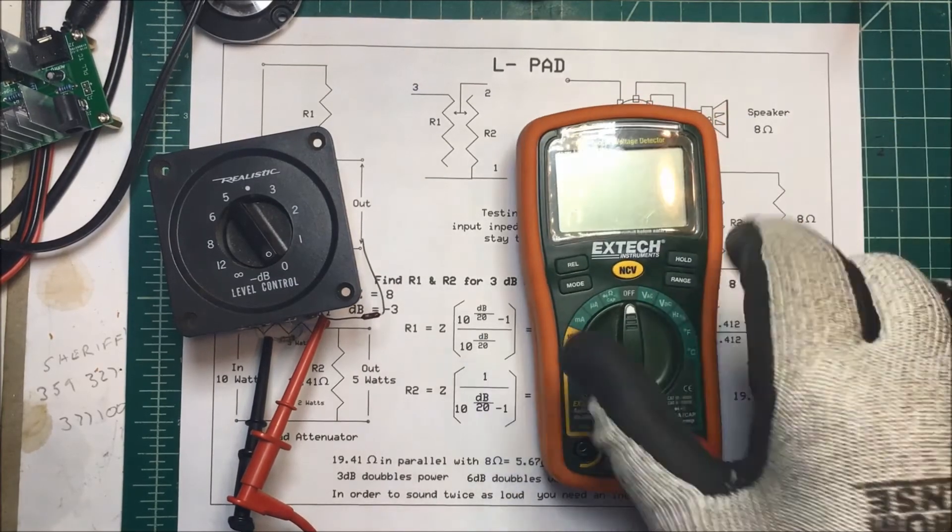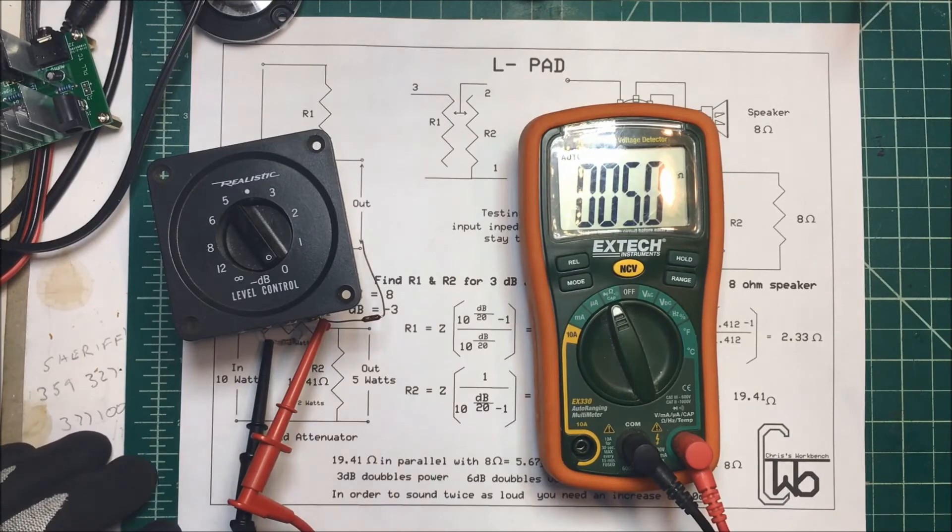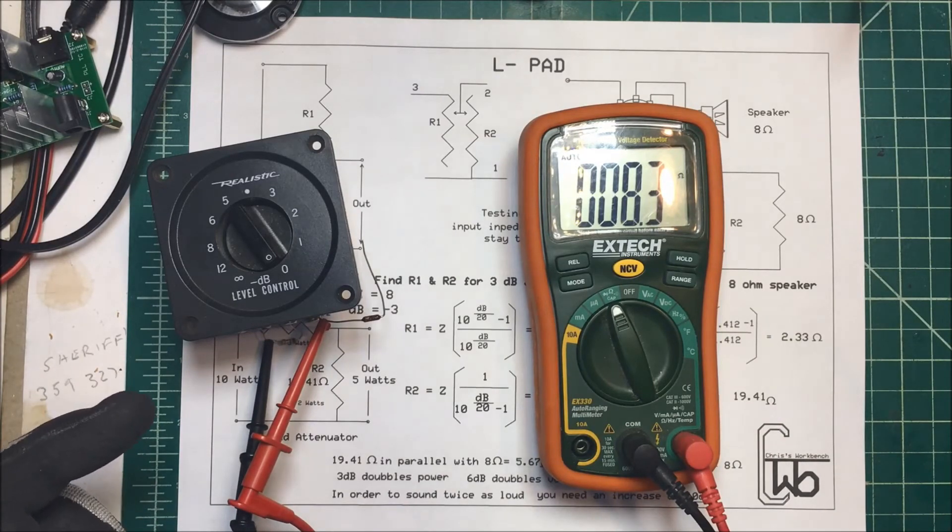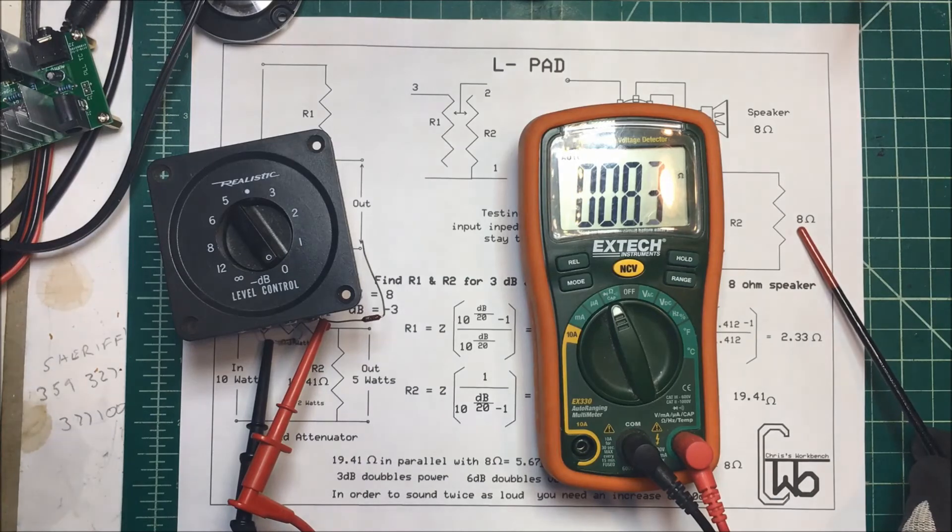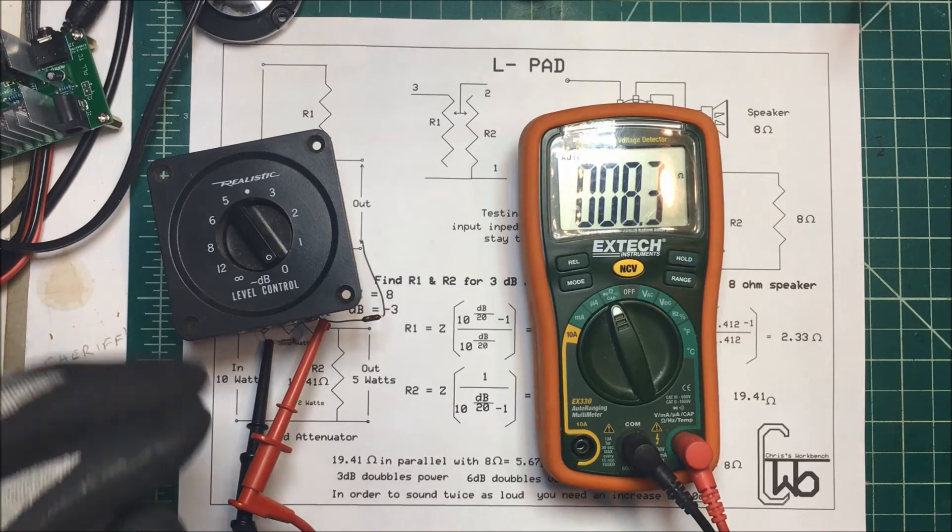We'll give that a try. So here's our ohm meter. Now I have across here, I don't have an 8 ohm, I have 8.2 ohms on there. That was the only resistor I could get. Can you see that?